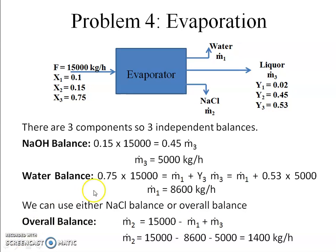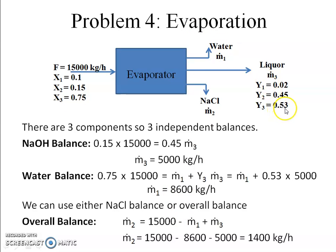NaOH balance: 0.15 times 15,000 equals 0.45 times m-dot-3. One equation, one unknown — solve to get m-dot-3 equals 5,000 kg per hour of thick liquor. Next, water balance: 0.75 times 15,000 equals m1-dot plus 0.53 times m-dot-3. Since m-dot-3 is now known, this reduces to one equation one unknown, giving m1-dot equals 8,600 kg per hour of water evaporated.